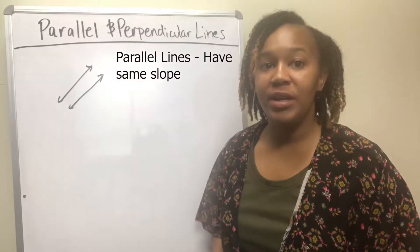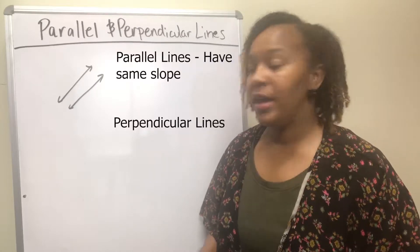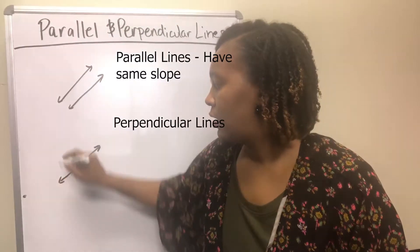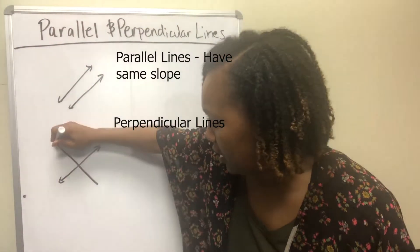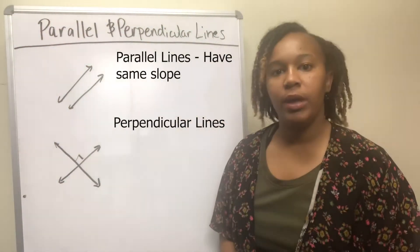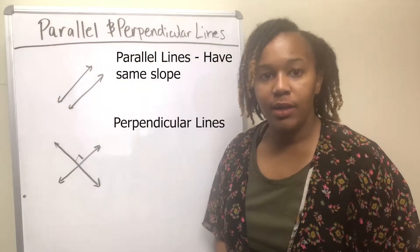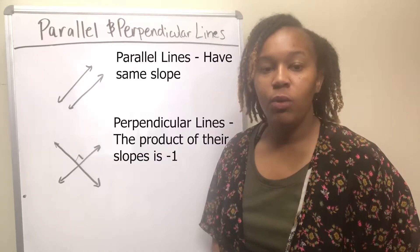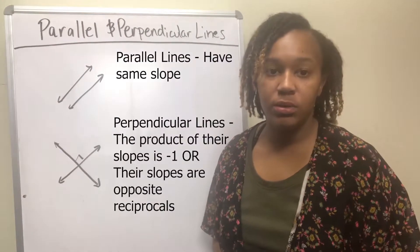Perpendicular lines are two lines that intersect, but they intersect particularly at a 90-degree angle. They intersect, and the angle of intersection is a 90-degree angle. Perpendicular lines — the product of their slopes is negative one, which is the same as saying that their slopes are opposite reciprocals of each other.